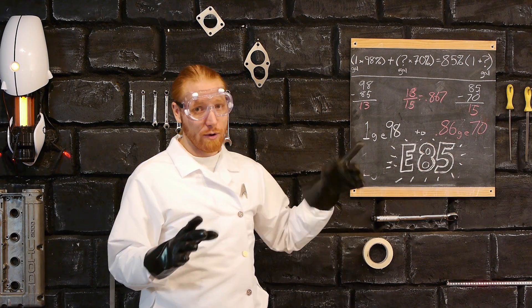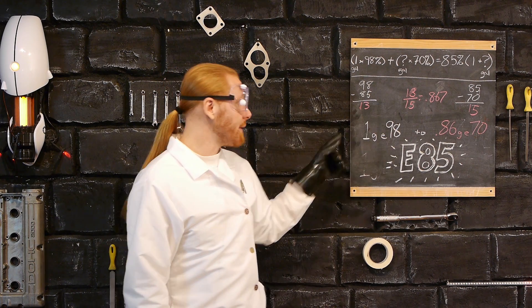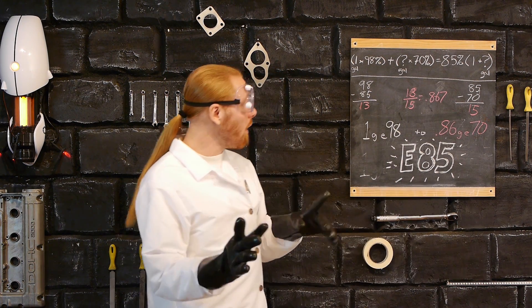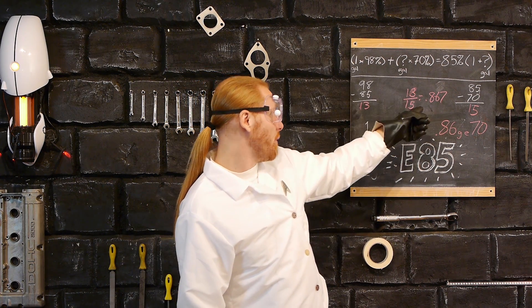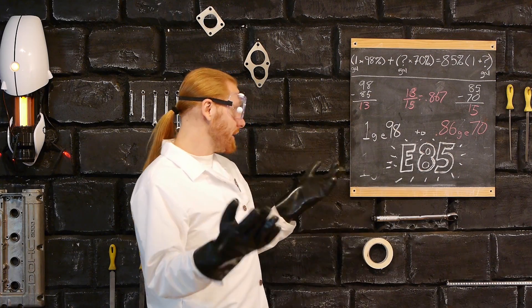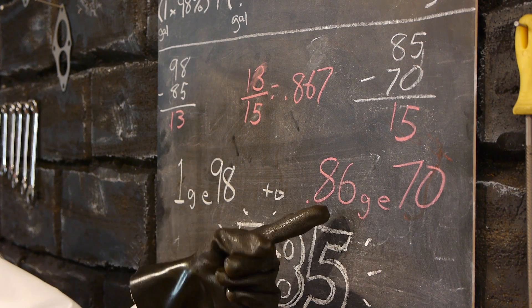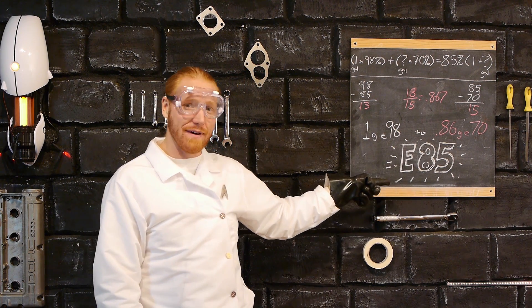So we're going for E85 and we're starting with E98. So subtract those two and you're going to get 13. Our sample is 70, subtract that from 85 and we get 15. Now all we got to do is take 13 divided by 15 and that gives us 0.867. That means all we need to do is mix one gallon of E98 and 0.86 gallons of E70 and we will get a perfect E85 mix.